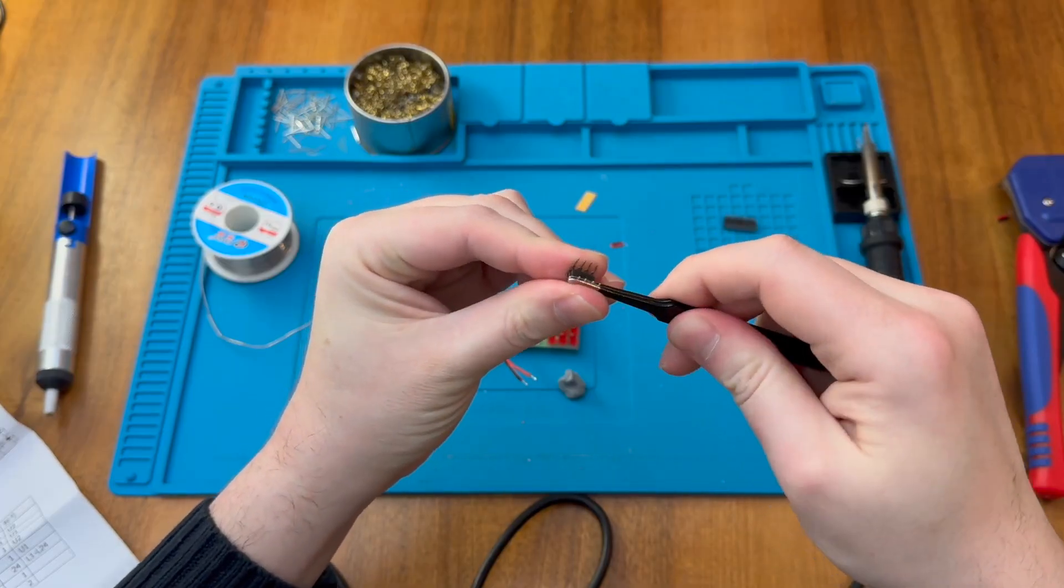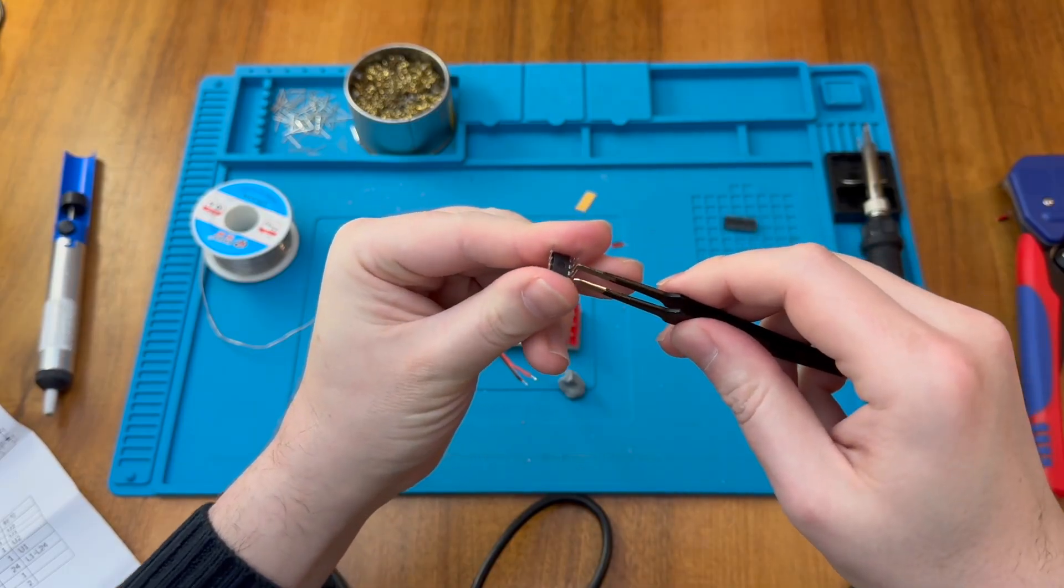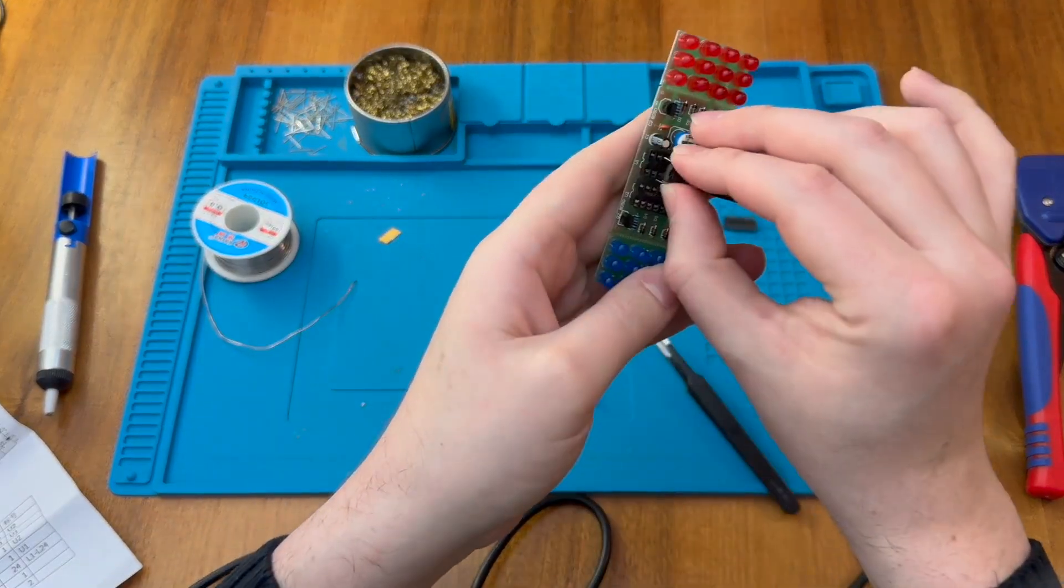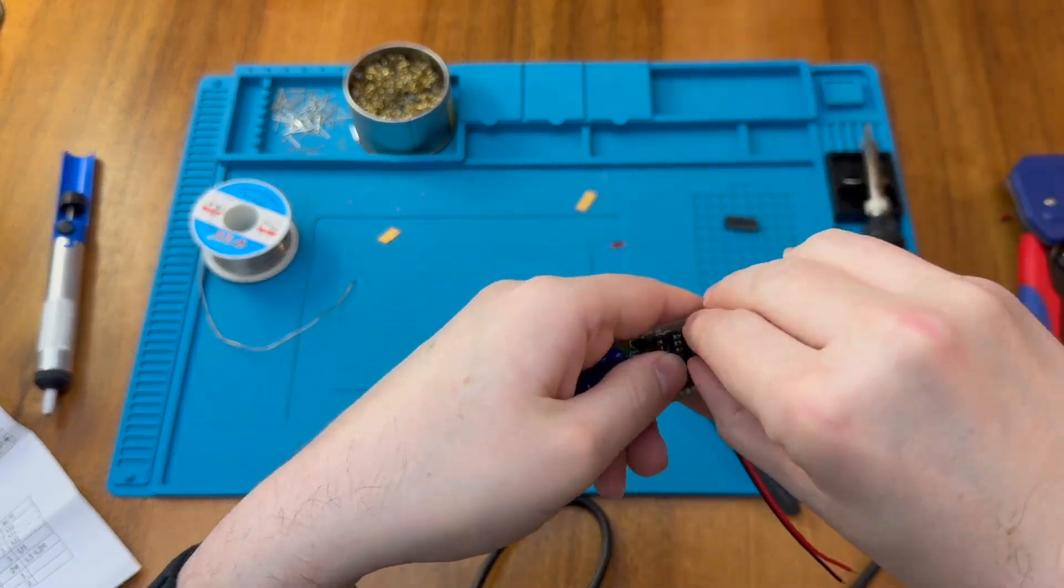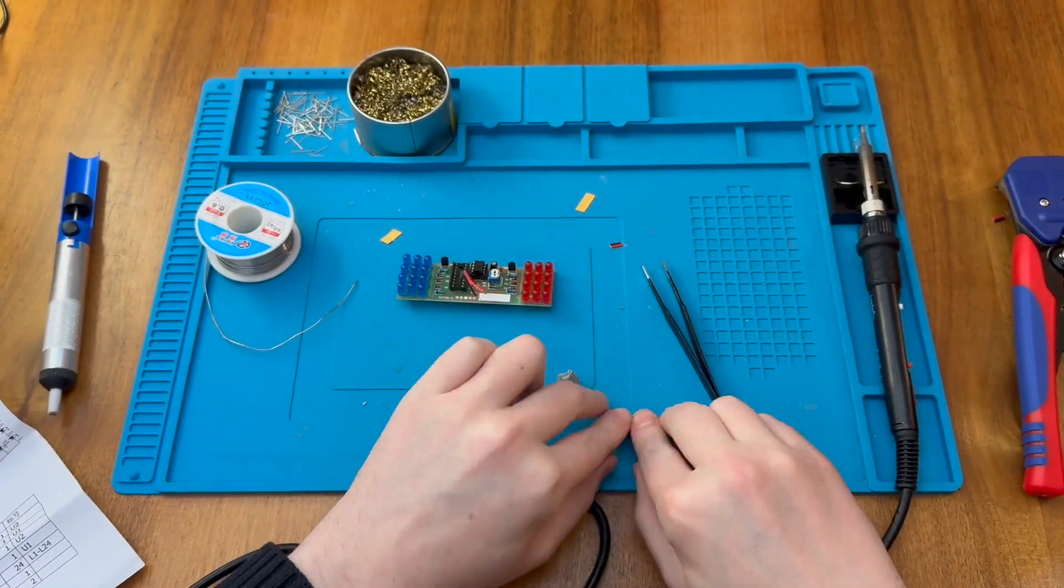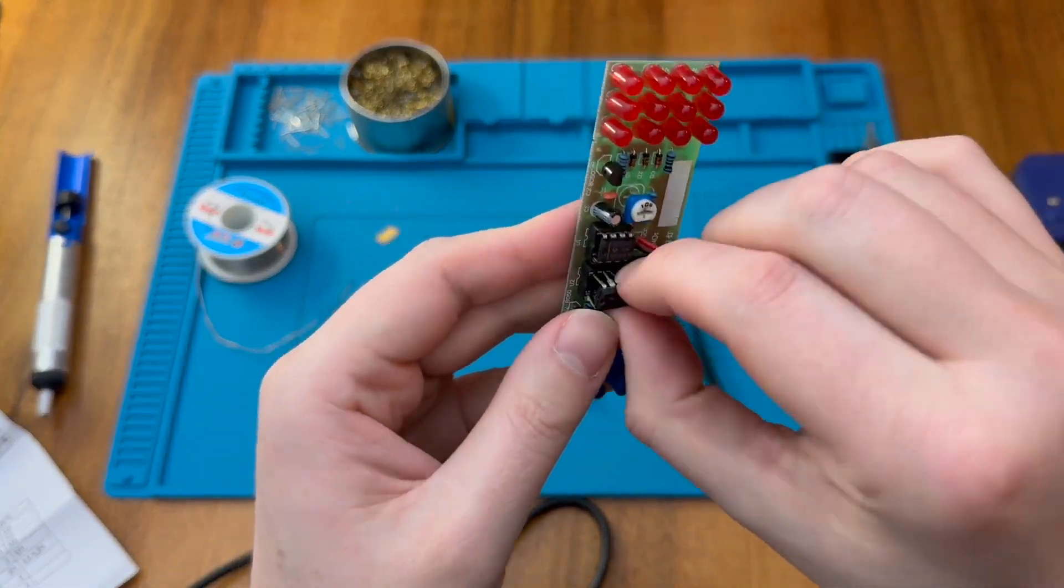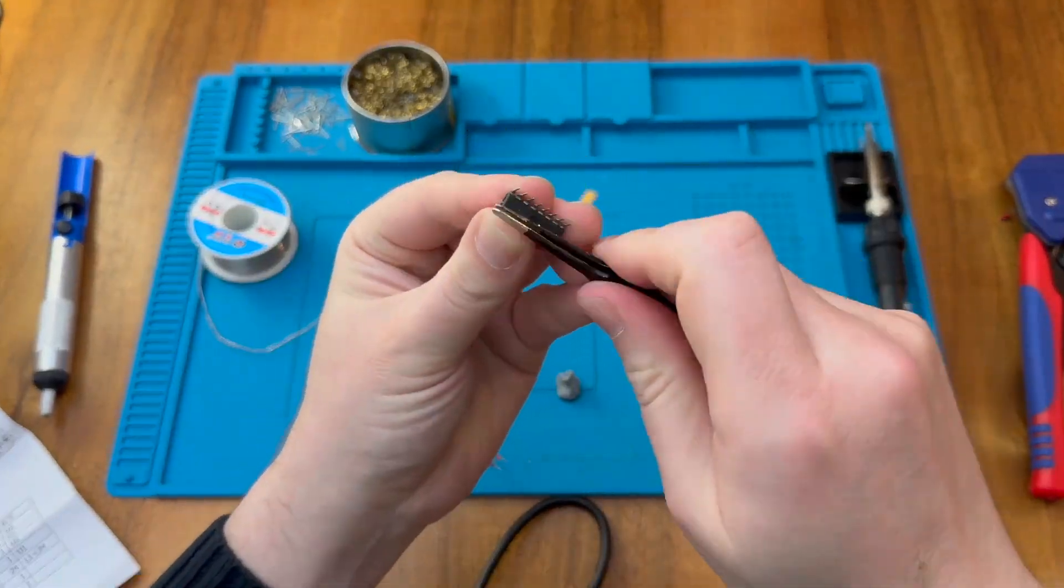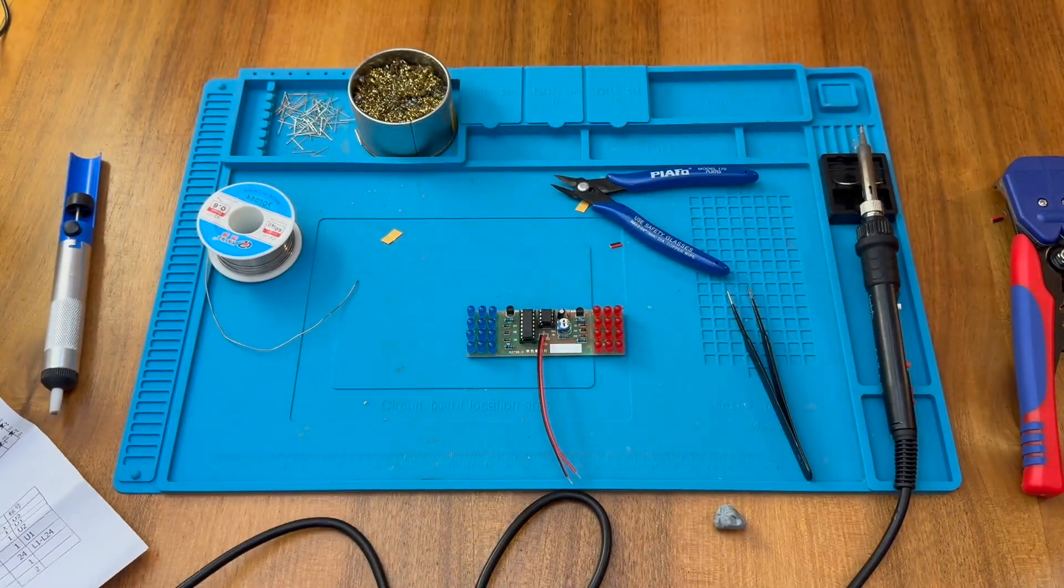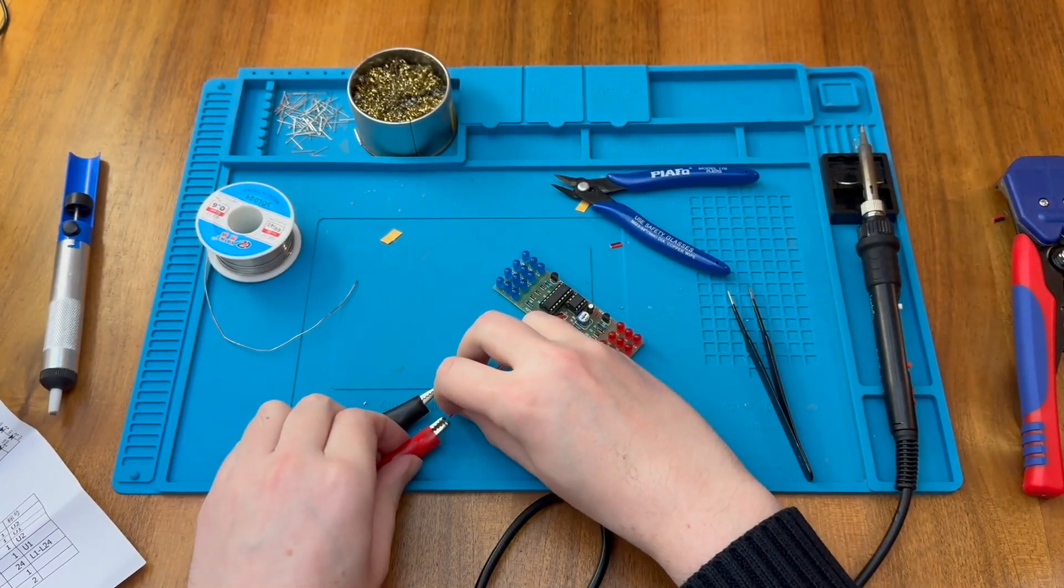Okay, so we're all done except for the chips. Just need to straighten the legs a little. This is our 555, and this is our CD4017. There we go. We have black, we have red.